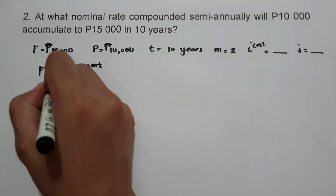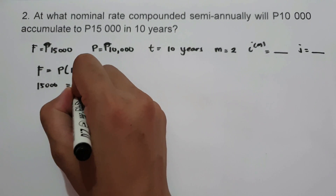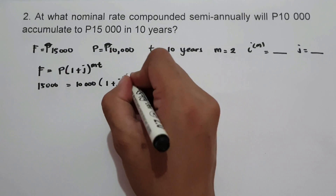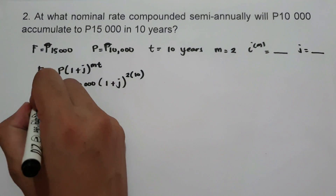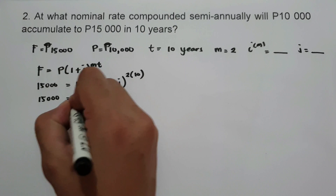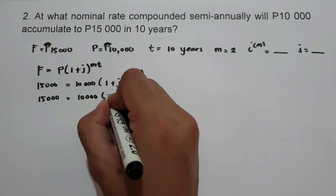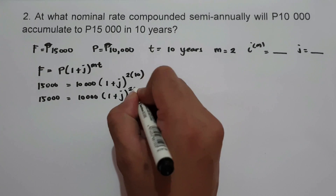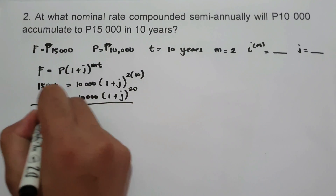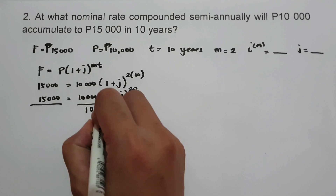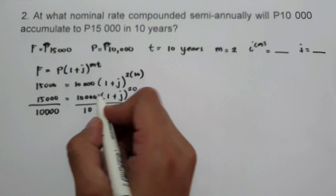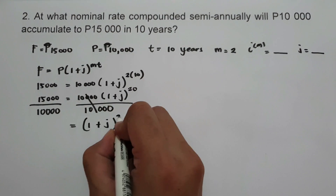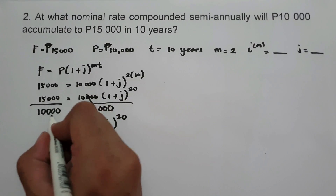Future value 15,000 equals principal 10,000 times the quantity of 1 plus J raised to M times T, that is 2 times 10. We write 15,000 equals 10,000 times the quantity of 1 plus J raised to 2 times 10, that is 20. Dividing the whole equation by 10,000, we get 1 plus J raised to 20 equals 15,000 divided by 10,000, that is 1.5.